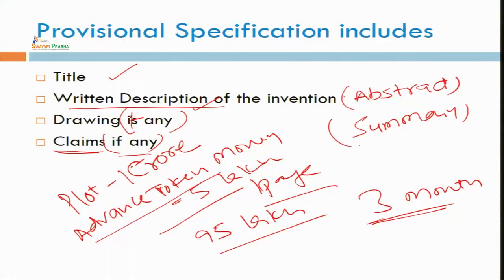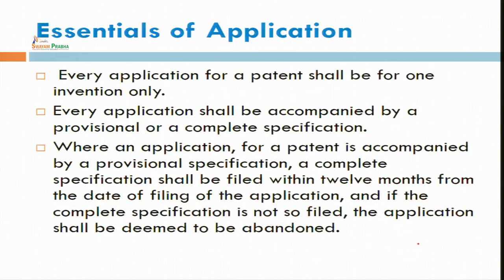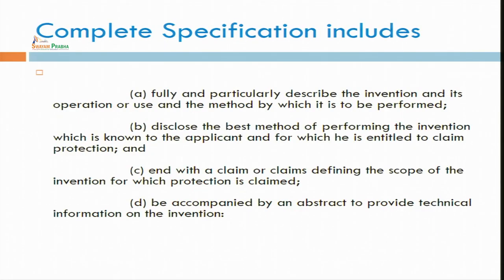Similarly, the objective of provisional specification is to just make sure you have filed your patent. In physical property, 3 months' time period is there; similarly here, 12 months are given for filing the complete specification. It is not necessary that you file an application with provisional specification — you can also file your application directly with the complete specification.